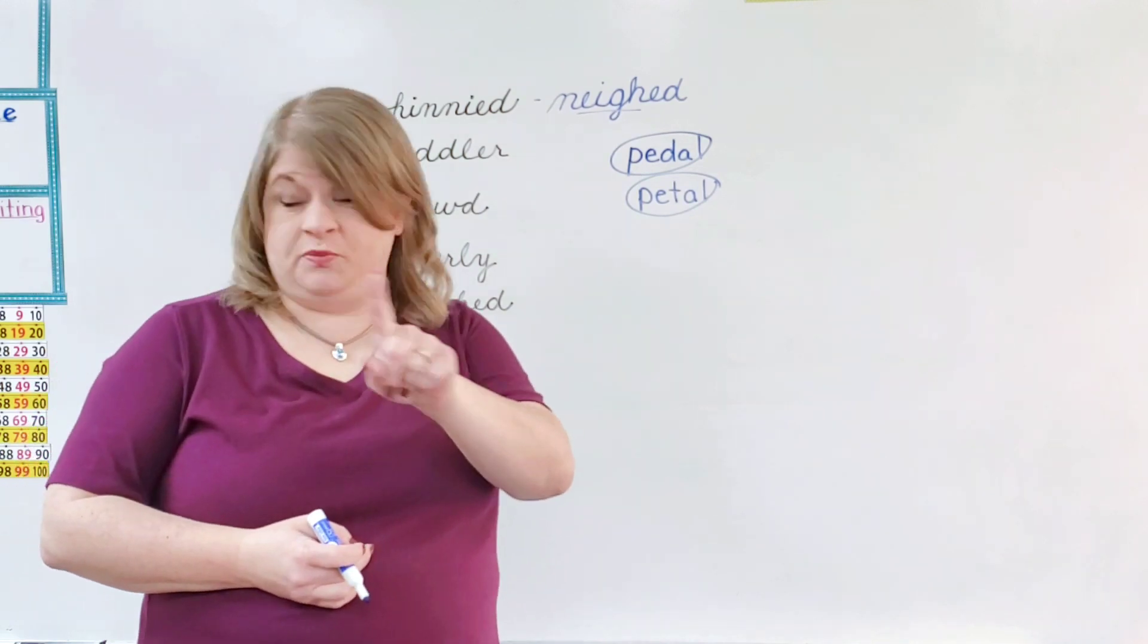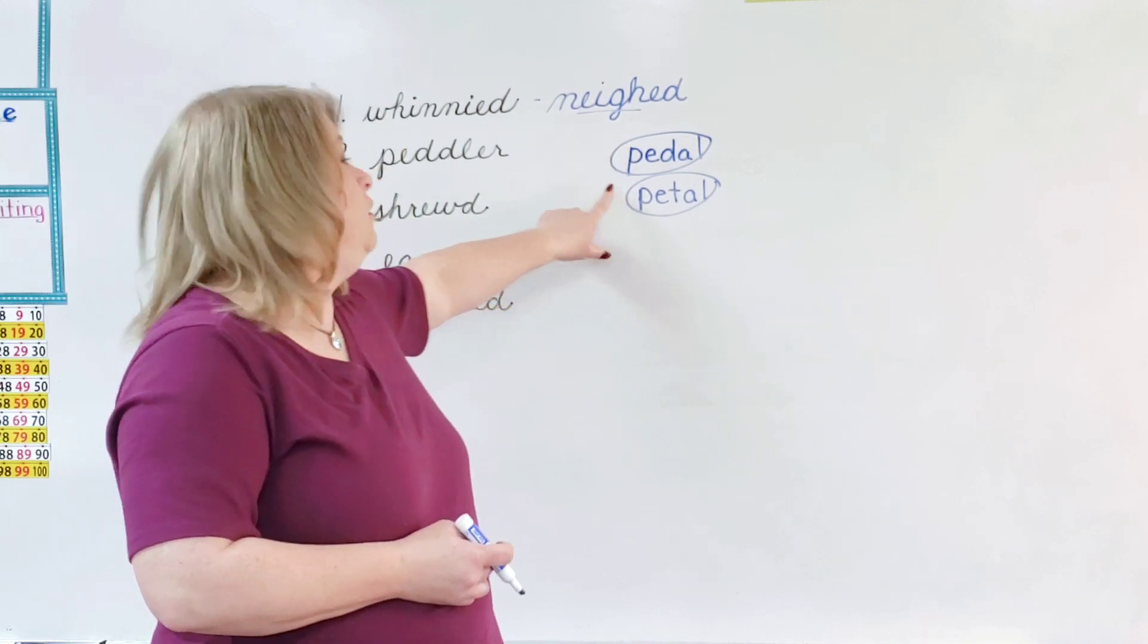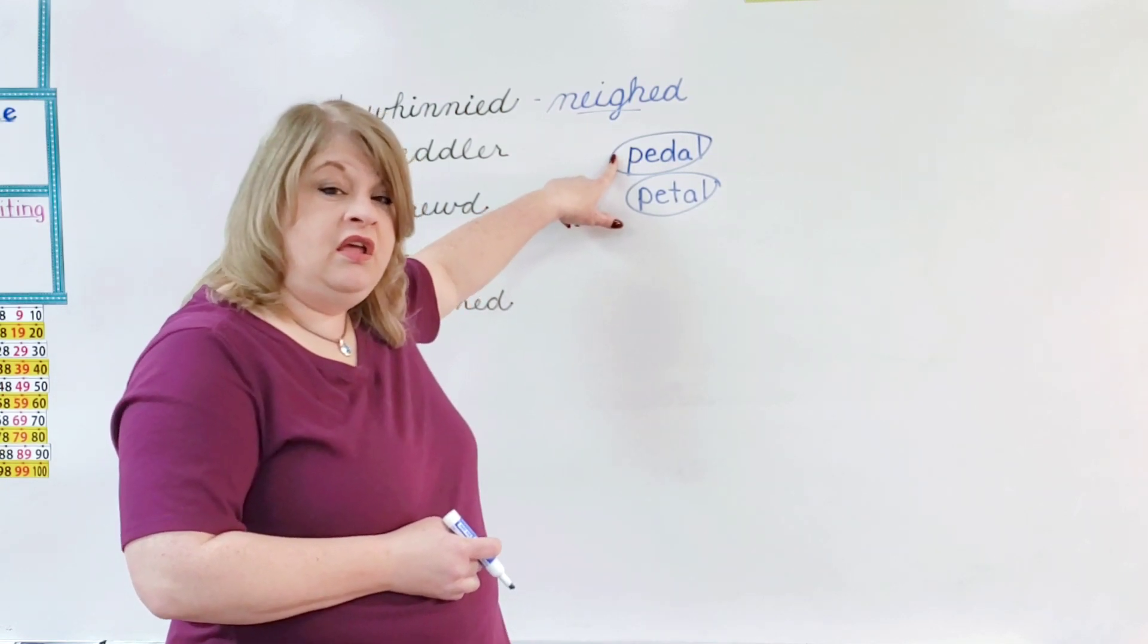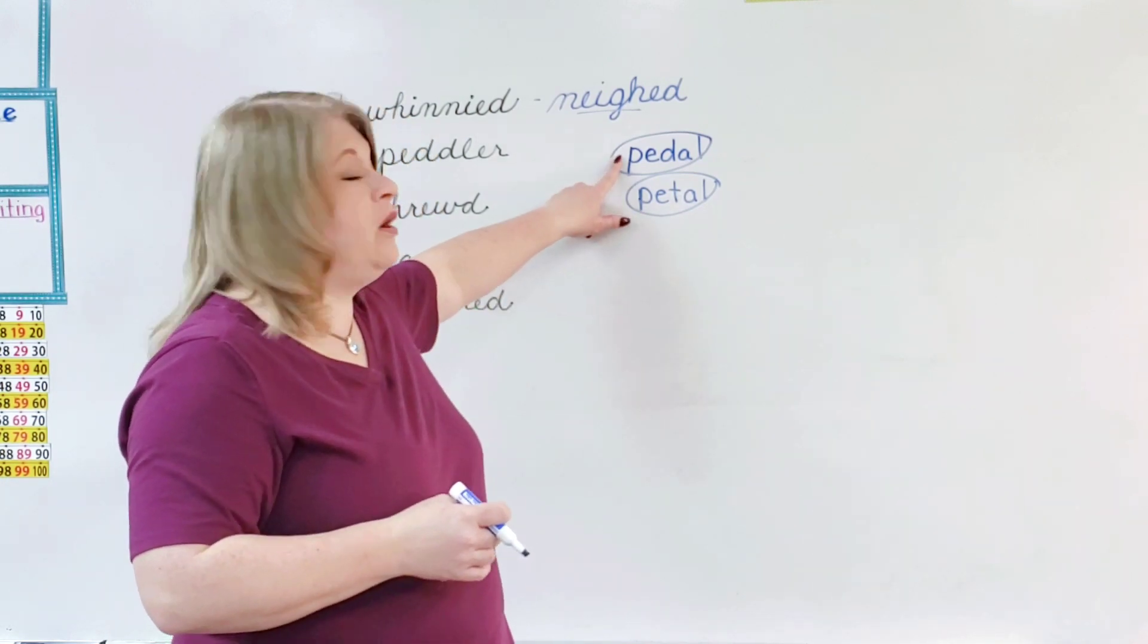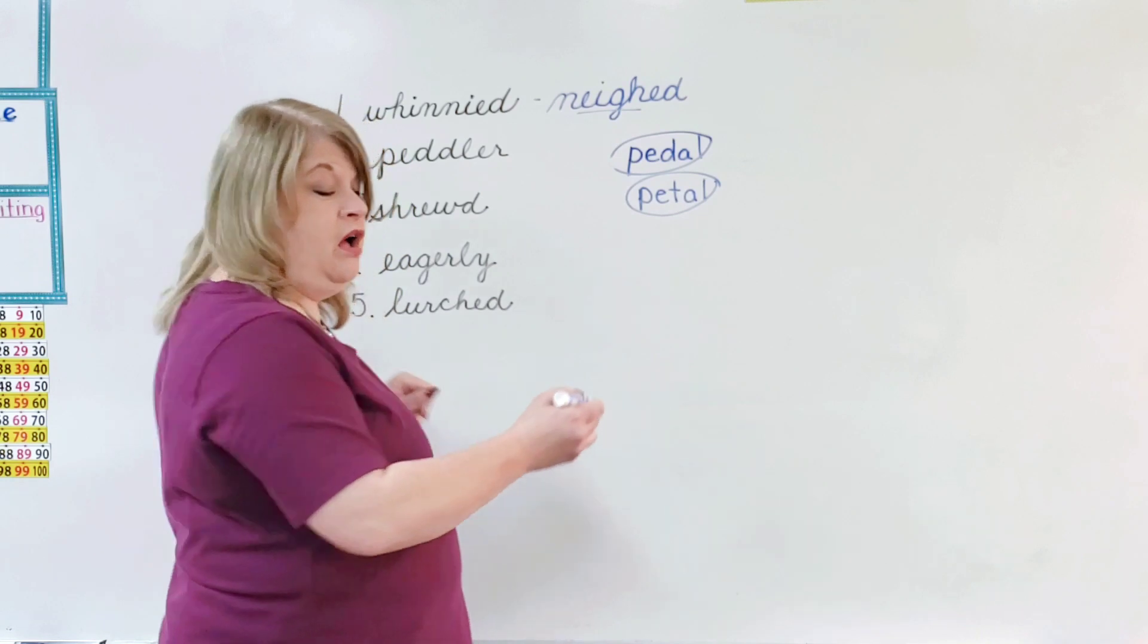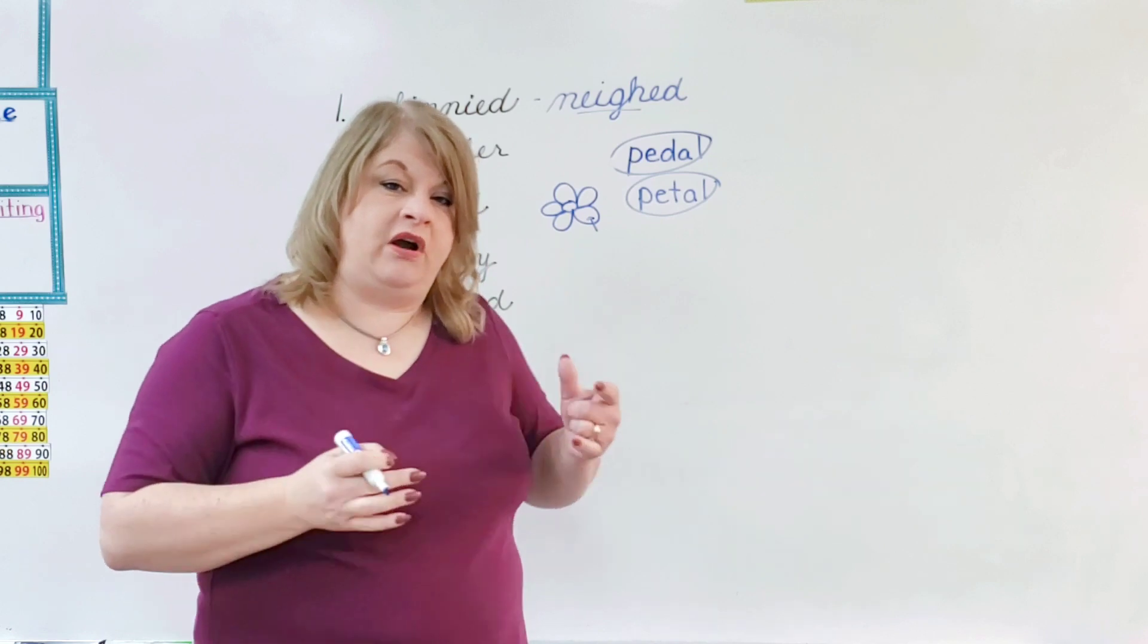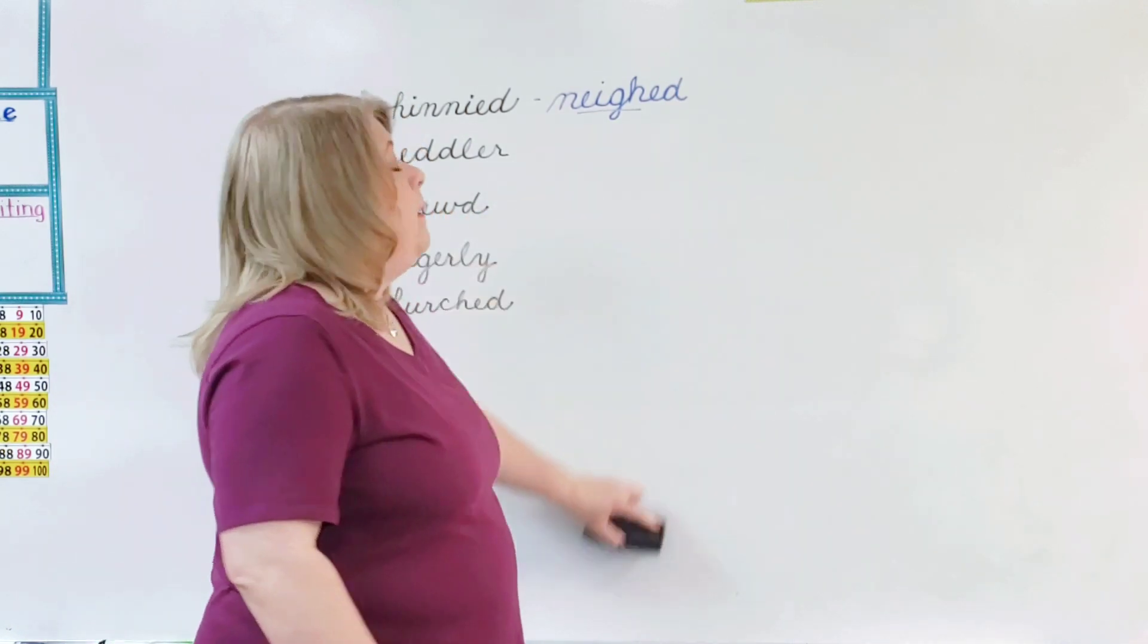Number two, peddler. I want to talk about this before we even read from the book. This is a way to spell pedal. This is a way to spell pedal. And this is peddler. Let's talk about this. Right here, pedal. Do you guys have a bike that you like to ride? You can use the pedal to push. You push it and it makes the bike go. You can say that you are pedaling. That's with a D. What about this one with a T? A flower petal. That's the pretty colorful part of a flower. That's not what we are talking about here.